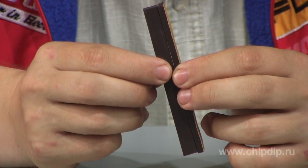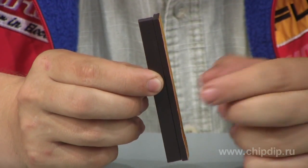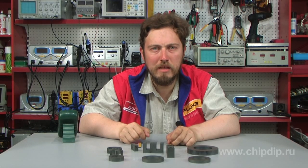Ferromagnetic materials with a wide hysteresis loop are called hard magnetic materials. They are used to create permanent magnets. Materials with narrow hysteresis loop and low coercive force are called soft magnetic materials.